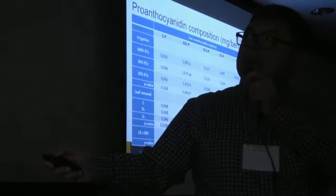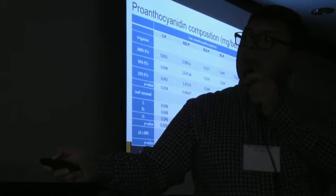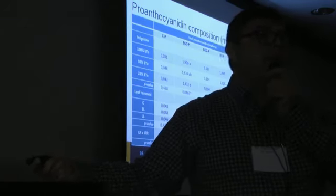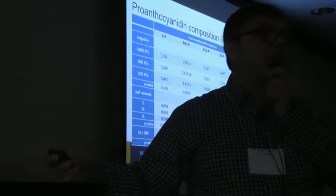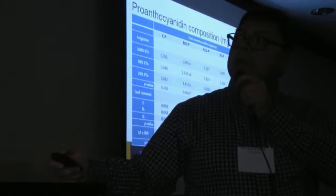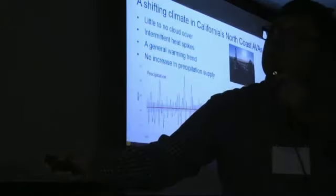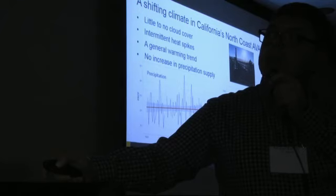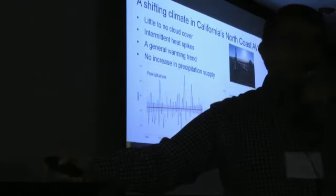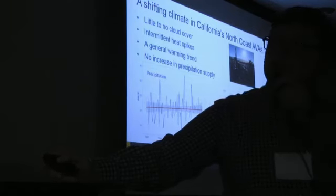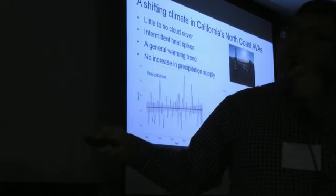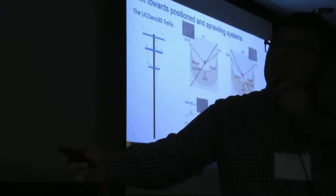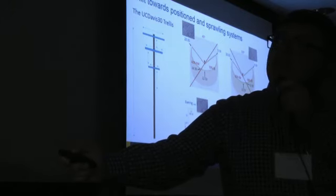Mean degree of polymerization, a rough measure of astringency in berry skins, was not affected by leaf removal or applied water amounts. Tannins are essentially a time capsule of ripening—how palatable they become as the berry ripens. We see a shift in climate in California's North Coast AVAs: little to no cloud cover, intermittent heat spikes, a general warming trend, and no increase in precipitation. Growing degree days are constantly increasing.